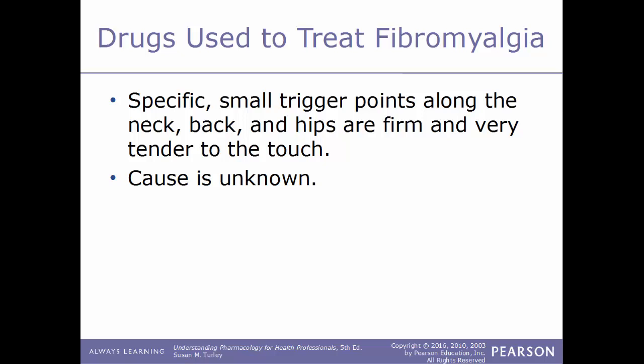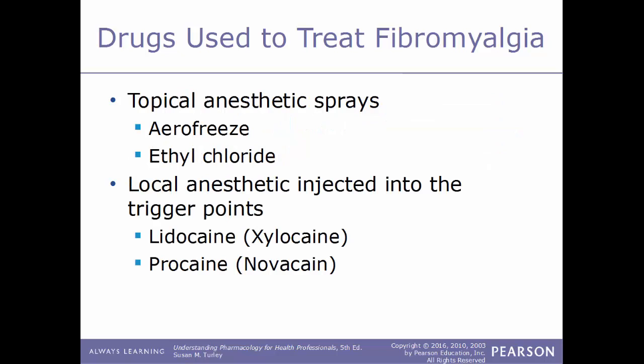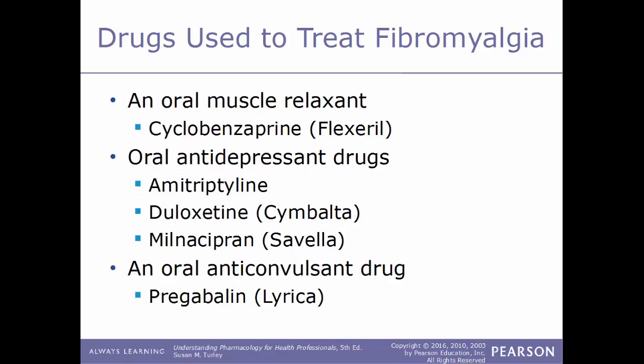Now, drugs used to treat fibromyalgia. The cause of fibromyalgia is currently unknown. It is diagnosed by specific small trigger points throughout the body — including the neck, back, and hips — that are very tender to the touch. Treatment options include a topical anesthetic spray such as Aerofreeze or ethyl chloride; local anesthetics injected into trigger points, such as lidocaine (Xylocaine) and procaine (Novocaine); oral muscle relaxants such as cyclobenzaprine (Flexeril); oral antidepressant drugs such as amitriptyline, duloxetine (Cymbalta), and milnacipran (Savella); and oral anticonvulsant drugs such as pregabalin (Lyrica).